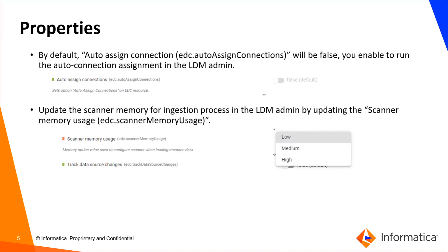Next, we are going to see the properties in EDC writer and the functions in the EDC writer module. The first property is auto connection assignment, which triggers the auto connection assignment job in EDC admin and resolves the reference assets created by MetaDex while extracting the metadata. By default, it is marked as false, and can be enabled based on requirement.